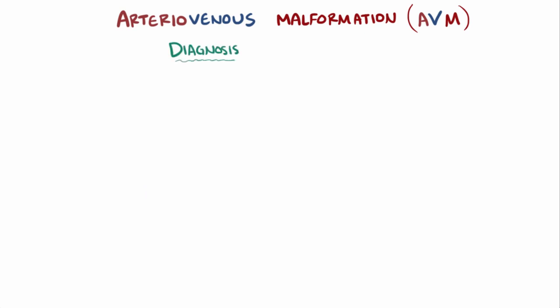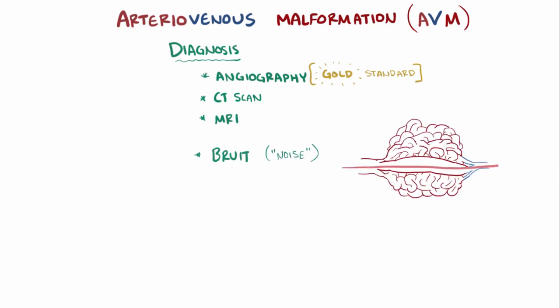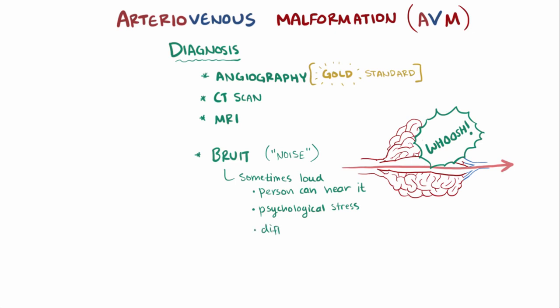Diagnosis might involve several imaging techniques, one of which is angiography, which is actually the gold standard, but others are CT scans and MRI. Aside from imaging, a distinctive clinical sign of an AVM is a bruit, which is French for noise. When blood flows rapidly through the AVM, it causes a whooshing noise. Sometimes this noise can get so loud, especially if the AVM is in the brain, that the person can hear it themselves, which can cause serious psychological stress, not to mention making it hard to sleep or hear other things.